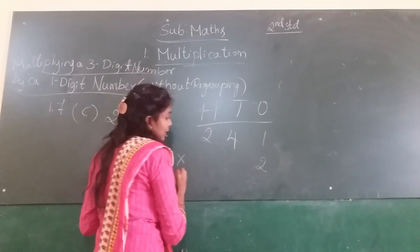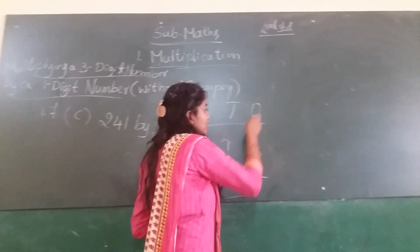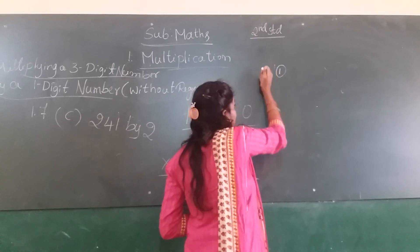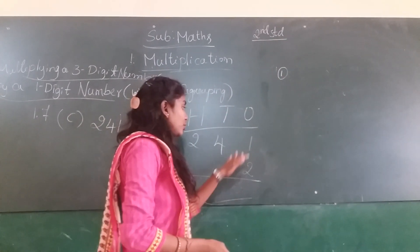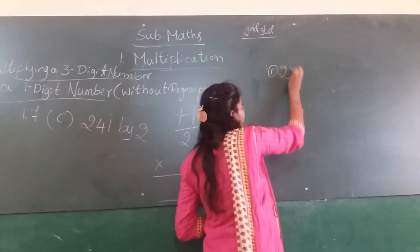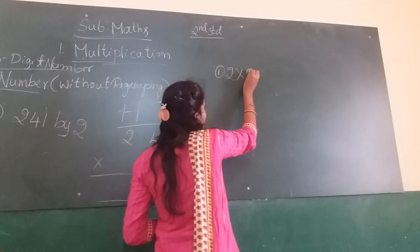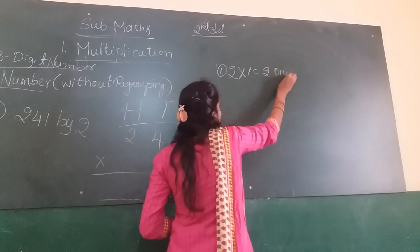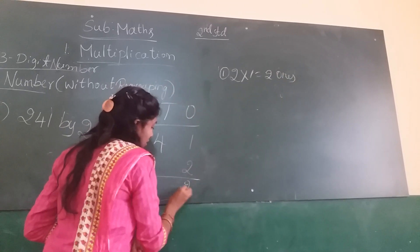So multiply. Next, first step, ones column. Now multiply, 2 into 1, 2 ones are, how much? 2. So write in the ones column.